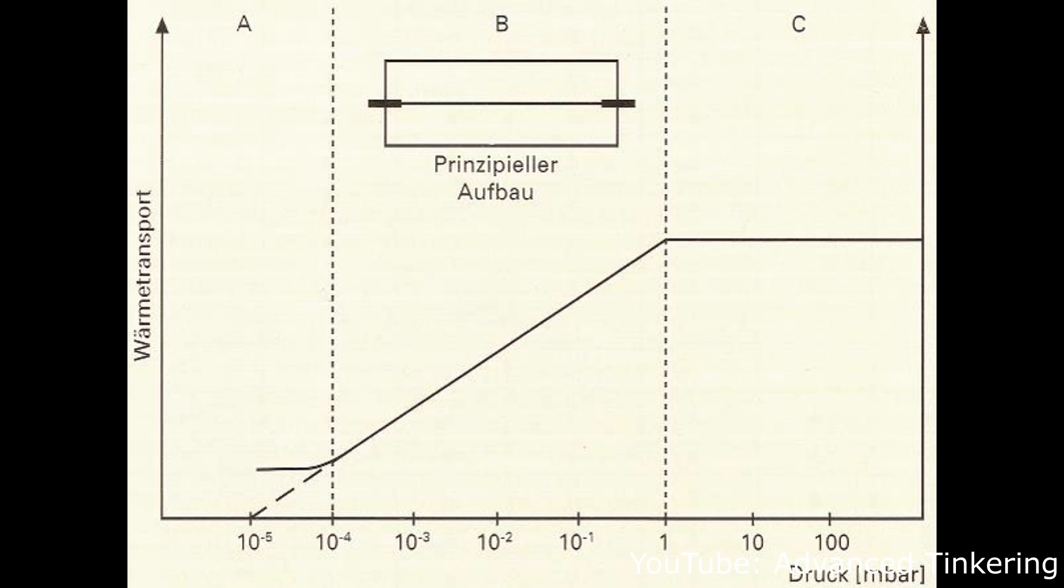The Pirani gauge is only capable of measuring a pressure reliably in a range of about 10 to the power of minus four to one millibar, and the capacitance gauge is able to measure the pressure from one millibar upwards, so one millibar to around room pressure, so a thousand millibars.